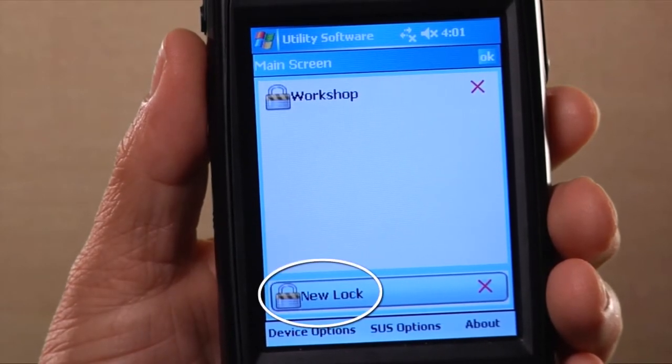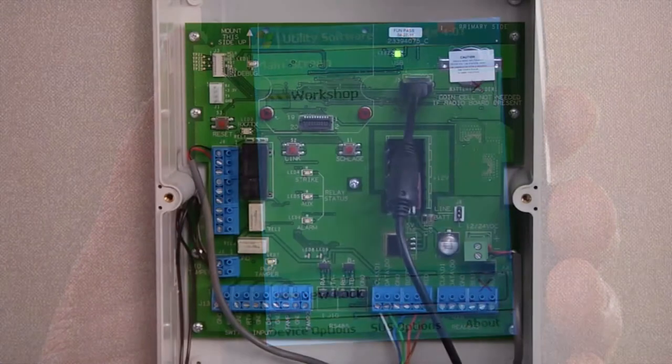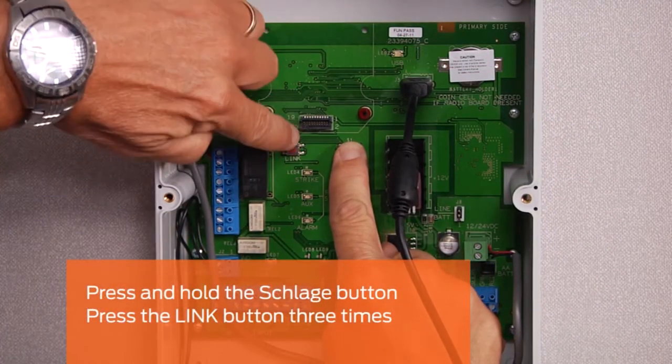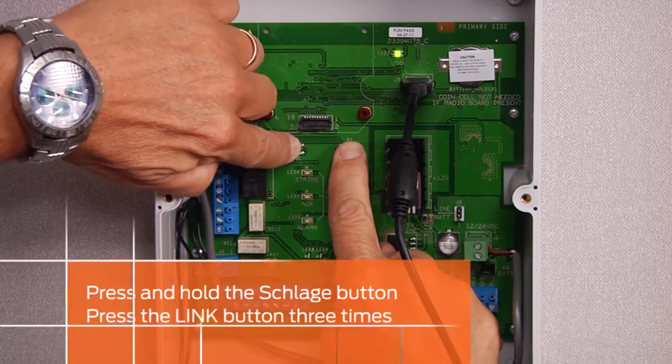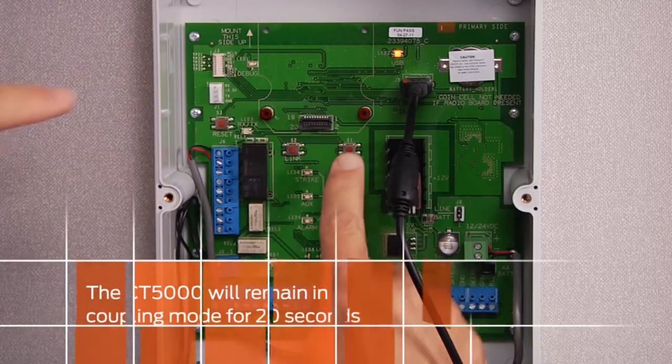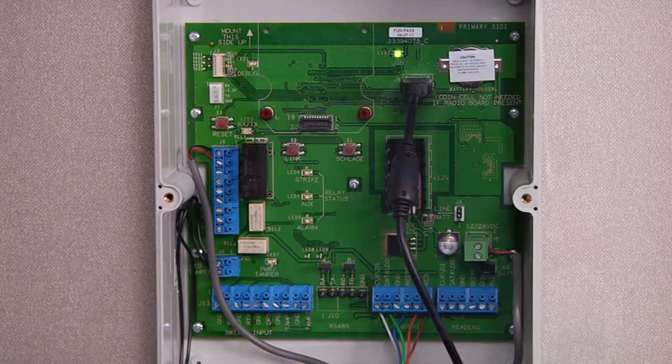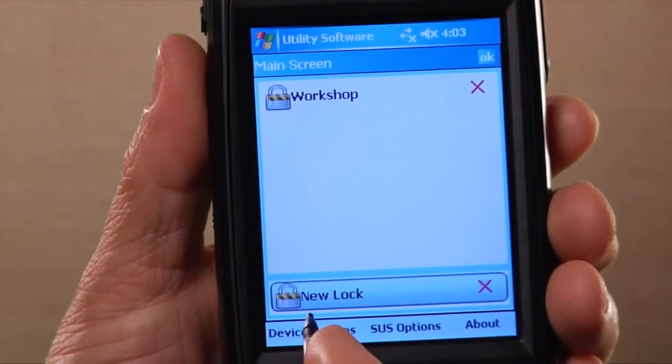To put the CT5000 in coupling mode, press and hold the Schlage button and press the link button three times. The CT5000 will remain in coupling mode for 20 seconds. On the HHD, tap device options, then tap couple HHD to device.